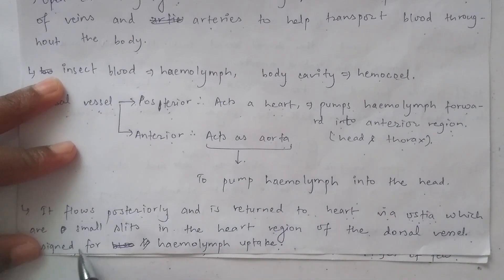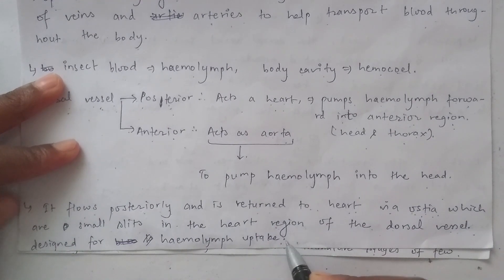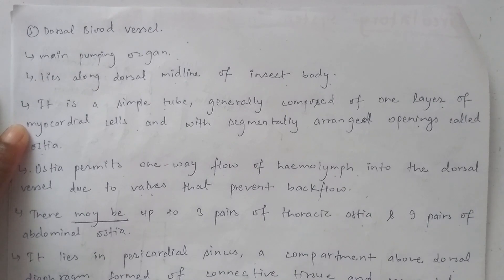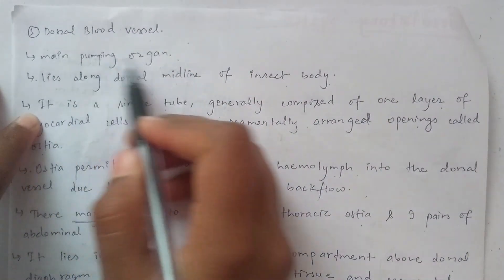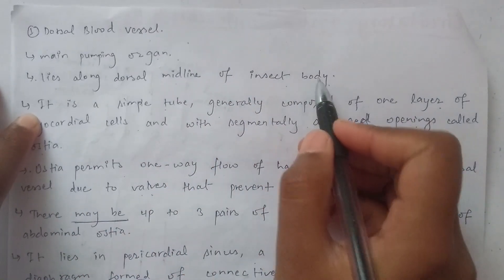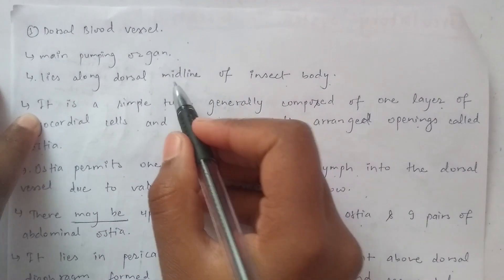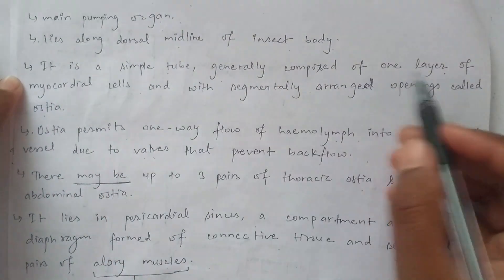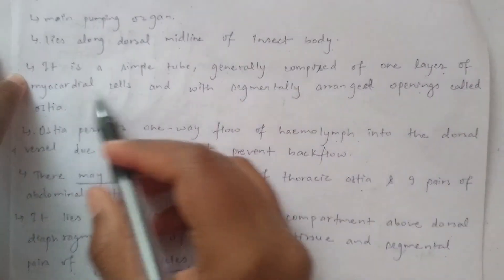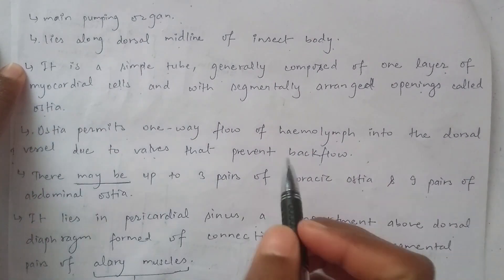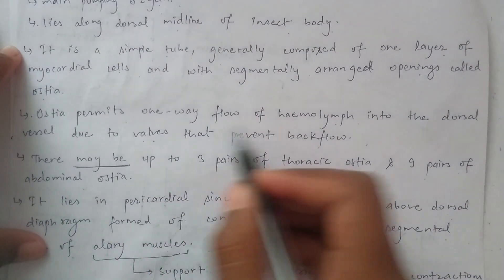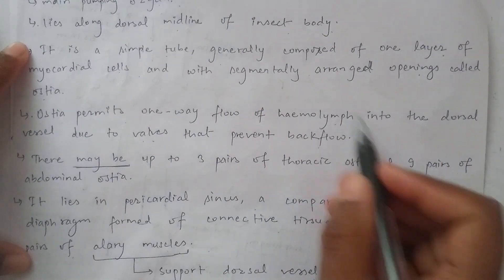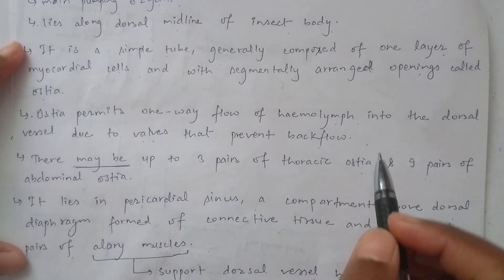The dorsal blood vessel is the main pumping organ. It runs along the midline of the dorsal surface. It is a simple tube, generally composed of one layer of myocardial cells, with segmentally arranged openings called ostia. The ostia permit the one-way flow of hemolymph into the dorsal vessel in the forward direction.